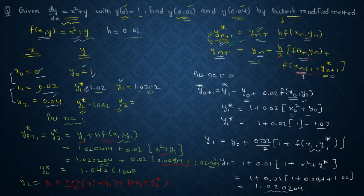You already have your value. When you expand it in this form it will form x₂² plus y₂*. x₂ is already given to you 0.04² plus y₂* you have found out 1.0406.